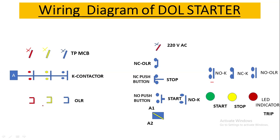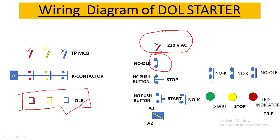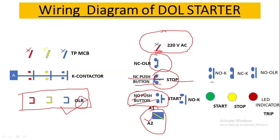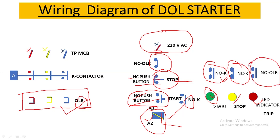The symbol legends include: OLR (thermal overload relay), single-pole MCB, NC contact of OLR, NC push button used for stop, NO push button used for start, the coil terminal (A1/A2), NO contact of contactor, NC contact of contactor, and NO contact of OLR. Understanding these symbols is essential before reading the wiring diagram.